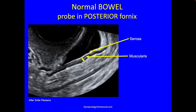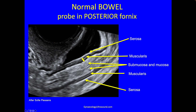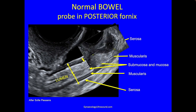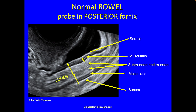The outer white serosa and the triple layer of muscularis — the dark-white-dark layer. The outer layer is longitudinal muscle fibers, some fibrous tissue, and the inner circular fibers — the muscularis, the most important layer here. Then we've got submucosa and mucosa together, and again muscularis and serosa. So this is the anterior wall, posterior wall, and that's the lumen. The muscularis layer is the most important layer.